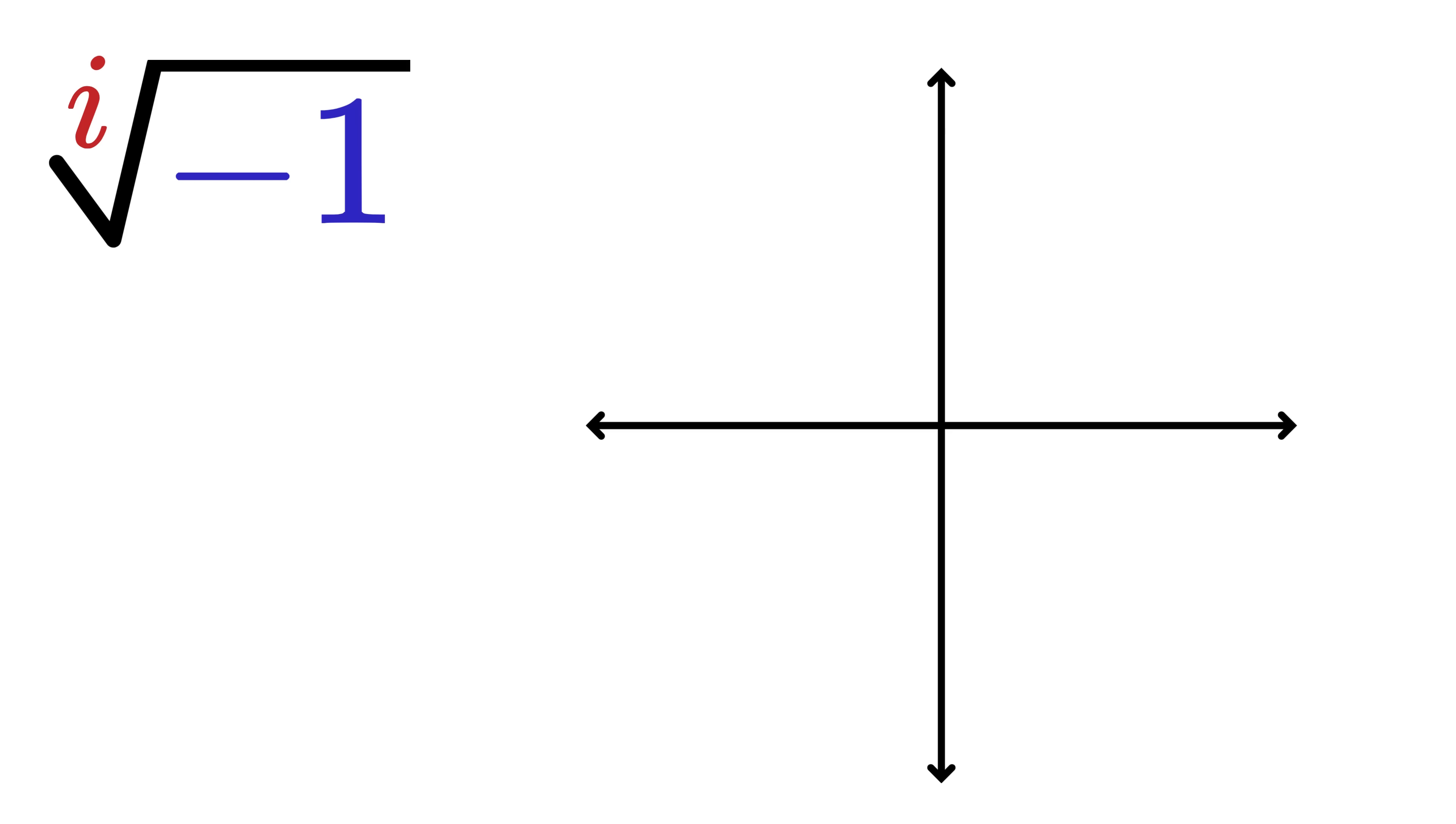Let's imagine a complex plane. On this plane, the horizontal axis represents the real part, and the vertical axis represents the imaginary part. Now, let's take a point called z somewhere on this plane. Any complex number can be written as a plus b times i, where a is the real part along the horizontal axis and b is the imaginary part along the vertical axis.